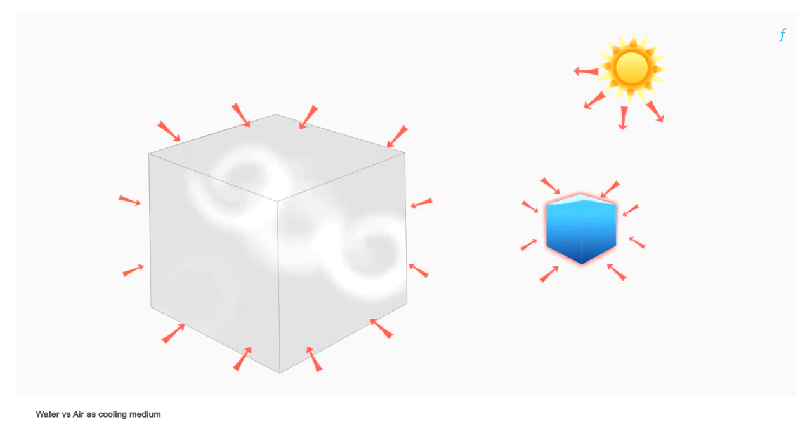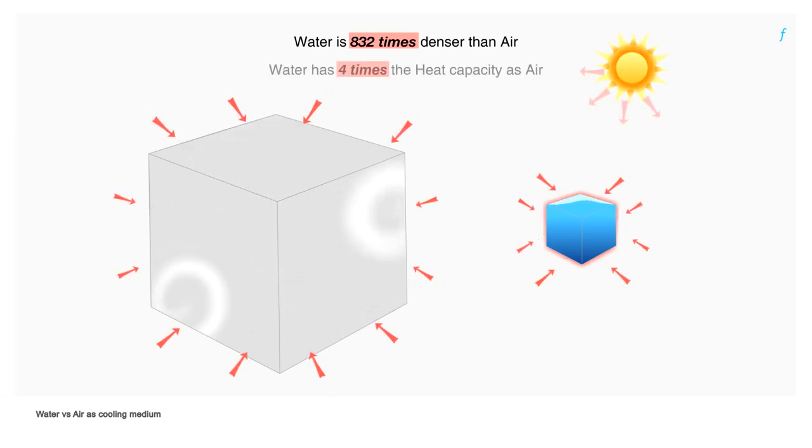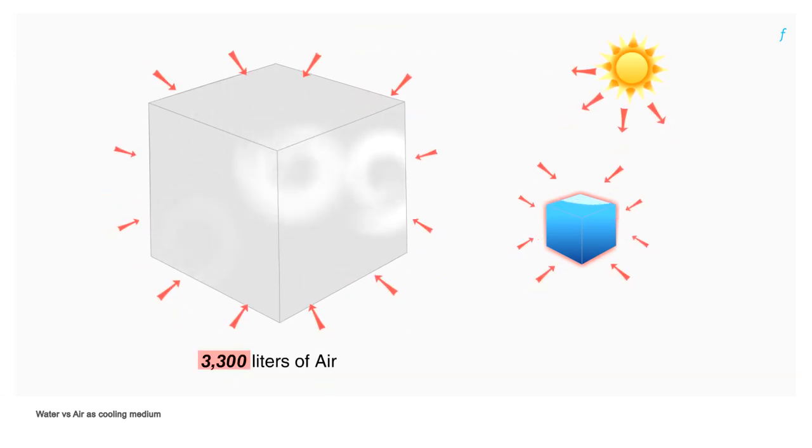Water is 832 times denser than air and has approximately 4 times the heat capacity as air. Effectively, one must circulate 3,300 liters of air as opposed to 1 liter of water to absorb the same amount of heat.